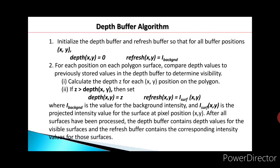In the depth buffer, we store the depth of the pixels. And in the refresh buffer, we store the intensity of the pixels. These two buffers are represented as two-dimensional arrays.